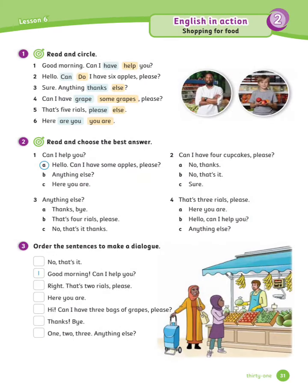Listen 6. Exercise number 1: Read and circle. Let's see the answers. Number 1: Good morning, can I help you? Number 2: Hello, can I have 6 apples please?